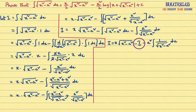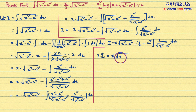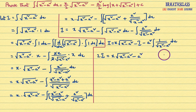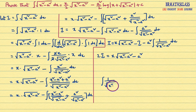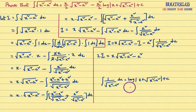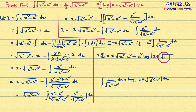Taking I to the left hand side: I plus I equals 2I. So 2I equals x into root over x square minus a square minus a square into integral of 1 divided by root over x square minus a square dx. We proved in a previous class that integral of 1 divided by root over x square minus a square dx equals log mod x plus root over x square minus a square plus c.